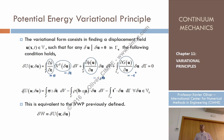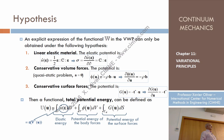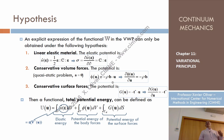The Gâteaux derivative of this functional turns out to be the expression of the virtual work principle. So in that case, I can say that I know what the functional is for which the virtual work principle states that the solution finds a local minimum. This functional is energy: the elastic energy integrated over the volume gives the elastic energy of the whole elastic body; then there is the potential of the body forces, and the potential of the surface forces.